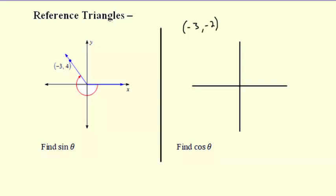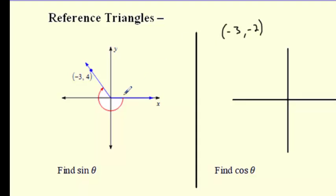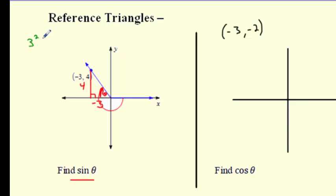Now we're going to make triangles — reference triangles. If I give you the point (-3, 4) for an angle, I want to find the sine of that angle. Instead of just the reference angle, this chunk here is theta. I drop a perpendicular down — I went over three and up four. Now I need to find the missing side using a² + b² = c².